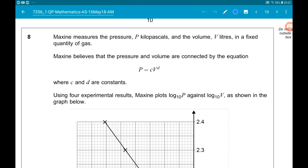Using four experimental results, Maxine plots log base 10 of P against log base 10 of V as shown below in the graph.